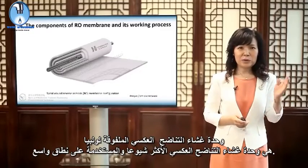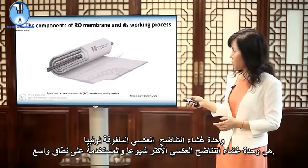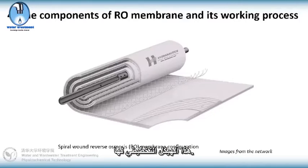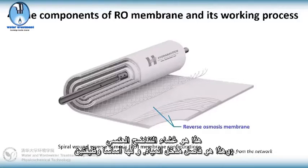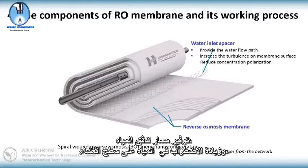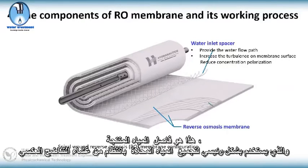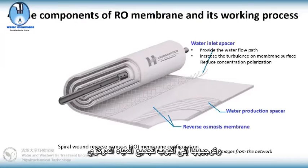The spiral wound reverse osmosis membrane module is the most typical and widely used reverse osmosis membrane module. This is its schematic structure. This is the reverse osmosis membrane, and this is the water inlet spacer. It mainly has two functions: to provide the water flow path, and to increase the turbulence of water on the membrane surface so that concentration polarization can be reduced. This is the water production spacer, which is mainly used to uniformly collect the desalinated water from the reverse osmosis membrane and guide it to the central water collection tube.